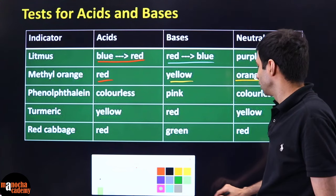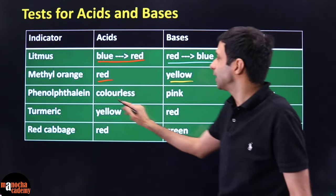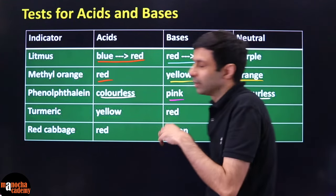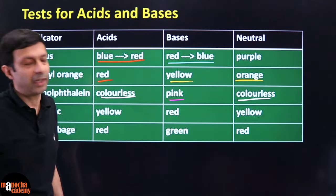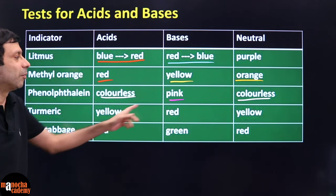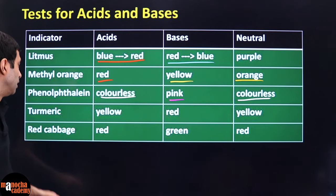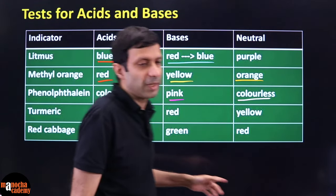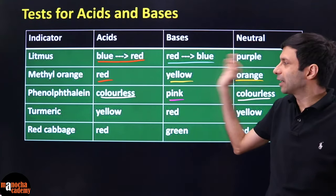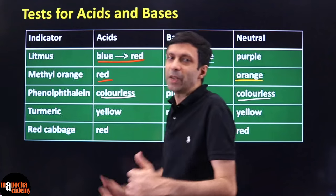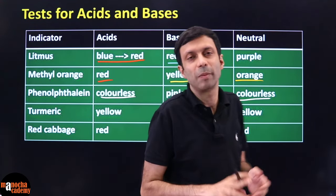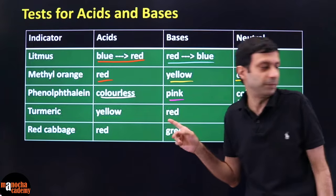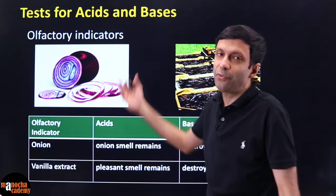Phenolphthalein: when neutral it is a colorless liquid. In acid it remains colorless, but when you add bases it becomes pink. Turmeric (haldi): neutral color is yellow, remains yellow in acid, but bases turn it red. Red cabbage: neutral color red, remains red in acid, but turns green for bases. This is a very important chart. They may ask — a certain substance changes turmeric to red, is it an acid, base, or neutral? You should know from the color.